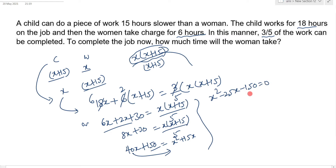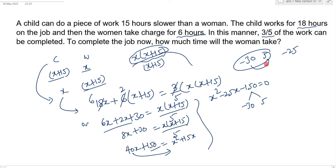Solving this quadratic using the shortcut method, break it into two parts: find factors whose sum is minus 25 and product is minus 150. Those are minus 30 and plus 5. So you get (x minus 30)(x plus 5) = 0, giving x equals 30 or x equals minus 5.